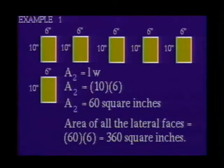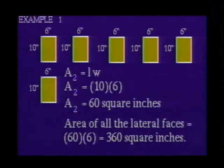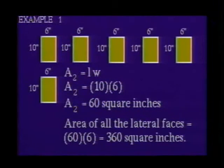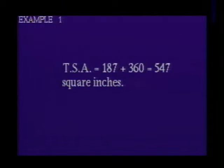Next, we will look at the lateral faces of the solid. There are six lateral faces, each a 6 by 10 inch rectangle. Using the formula A₂ = length × width, and substituting 10 for length and 6 for width, we get A₂ = 60 square inches per rectangle. We find the area of all lateral faces by multiplying 60 by 6, which gives us 360 square inches. The total surface area of this hexagonal prism is 187 + 360, which equals 547 square inches.